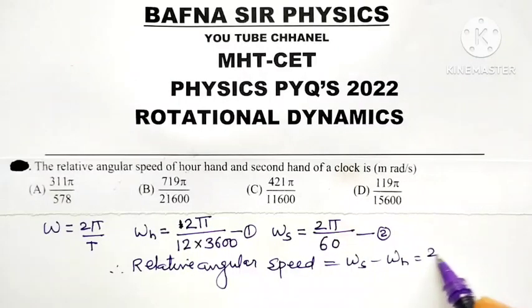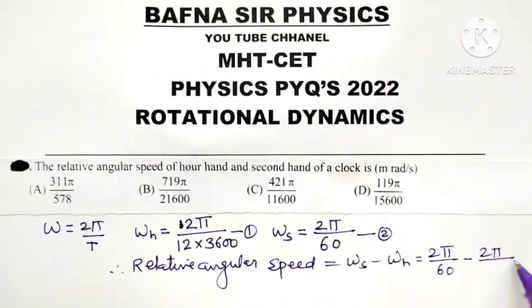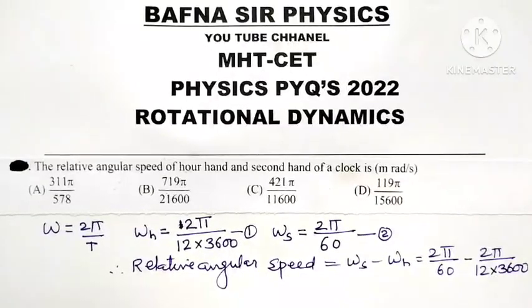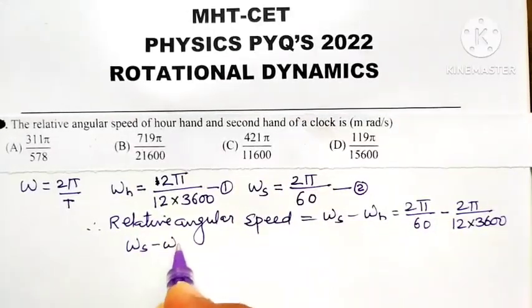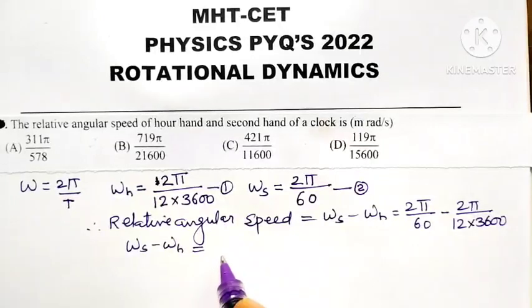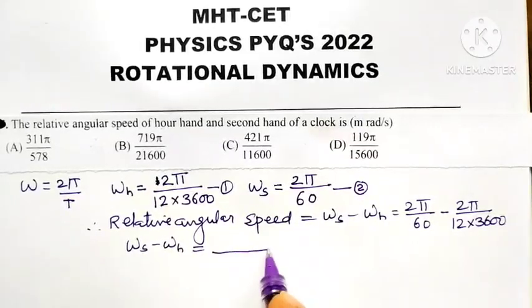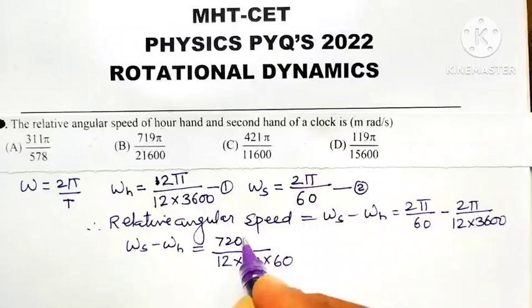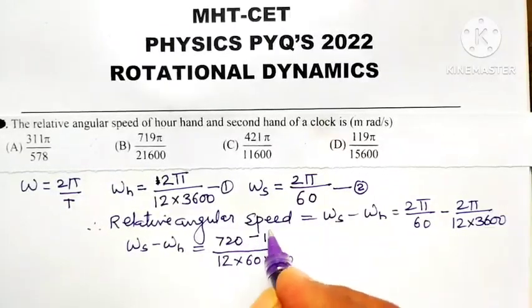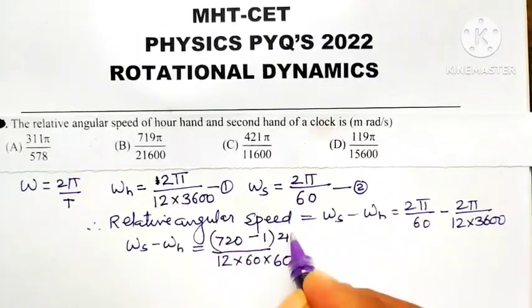Omega s is 2π divided by 60 minus 2π divided by 12 into 3600. This is equal to, now take LCM as 12 into 60 into 60. So cross multiply this.